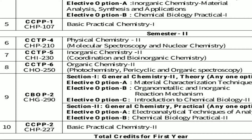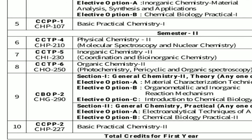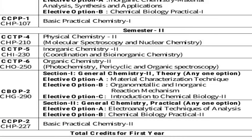In the first section, students can choose any of three options. Here we choose elective option B, that is organometallic and inorganic reaction mechanism, because this topic is very important for your NET/SET examination. In the second section, there are two elective options for the practical.